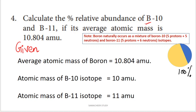The average atomic mass given is 10.804 amu. B10 has an atomic mass of 10 amu and B11 has an atomic mass of 11 amu.